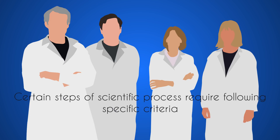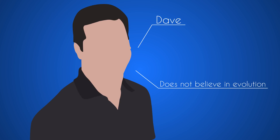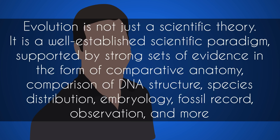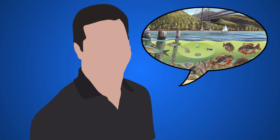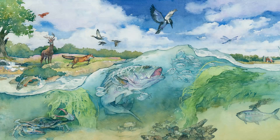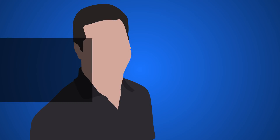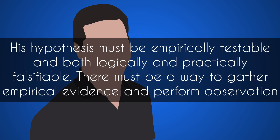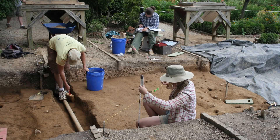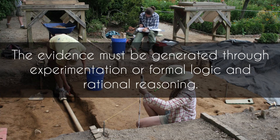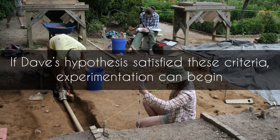However, certain steps of the scientific process require following specific criteria. Let's say a person — for example, your friend Dave — does not believe in the theory of evolution. Evolution is not just a scientific theory; it is a well-established scientific paradigm supported by strong sets of evidence in the form of comparative anatomy, comparison of DNA structure, species distribution, embryology, fossil record, observation, and more. It is expected of Dave to present an alternative that describes an aspect of the living world better than the theory of evolution does, and then conduct a study. Dave needs to construct a hypothesis on how life on this planet took its current form. His hypothesis must be empirically testable and both logically and practically falsifiable. There must be a way to gather empirical evidence and perform observation. Dave needs to start collecting evidence to support his hypothesis while following the guidelines presented by scientific method. The evidence must be generated through experimentation or formal logic and rational reasoning.